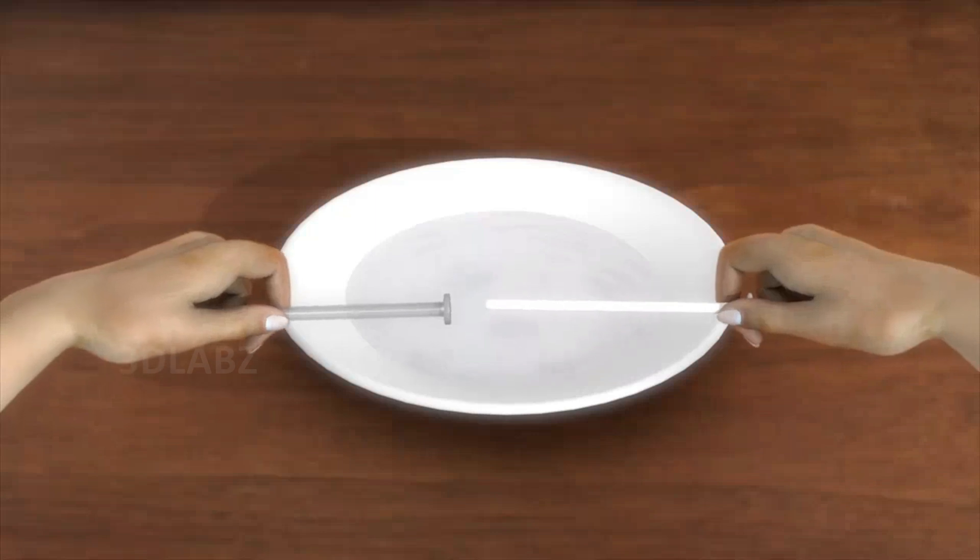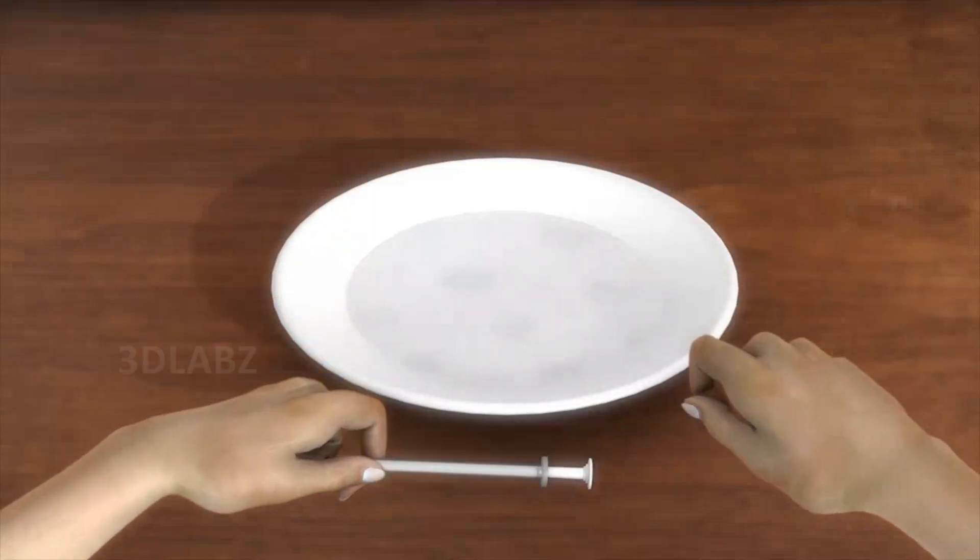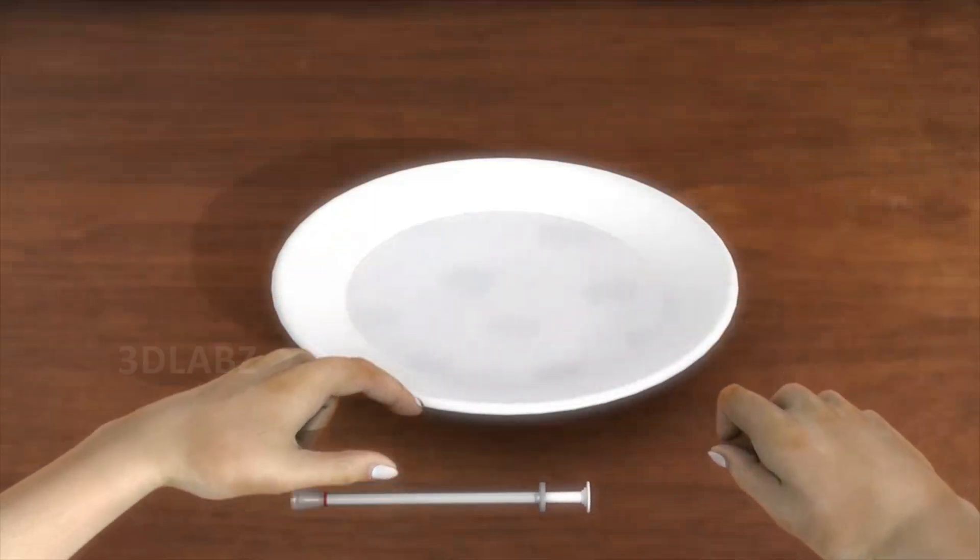Step 7. To reassemble the applicator, simply push the plunger back into the barrel beyond the point where resistance is felt and your applicator is ready for the next dose to be administered.